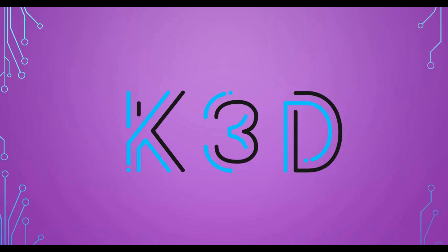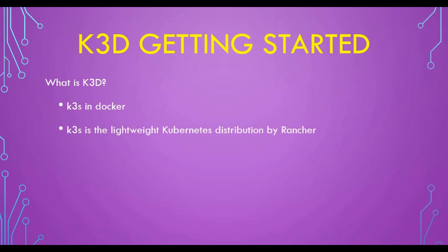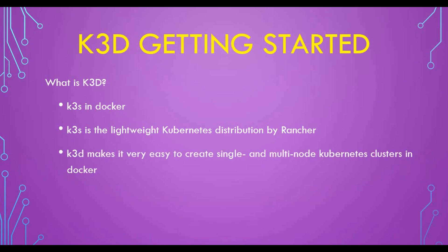Let's discuss k3d. Some of you may be aware of k3d or k3s by Rancher. To understand k3d, you first need to know about k3s. k3s is a lightweight Kubernetes distribution by Rancher — similar to how we call Kubernetes 'k8s', this is called k3s. When you run k3s inside Docker, it's called k3d.